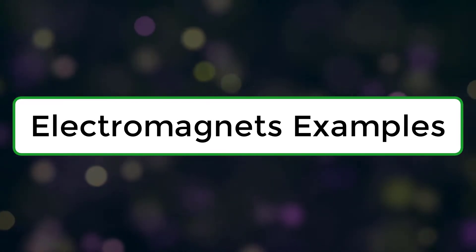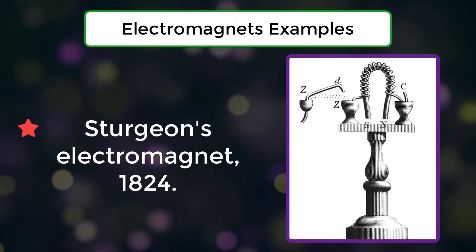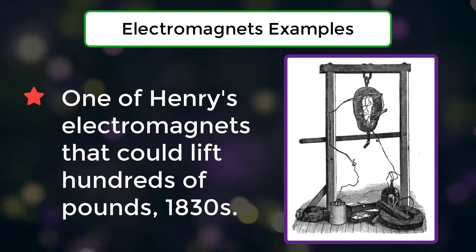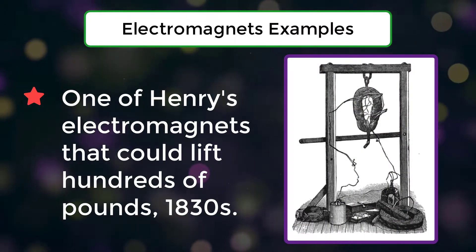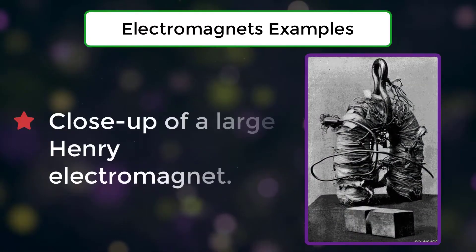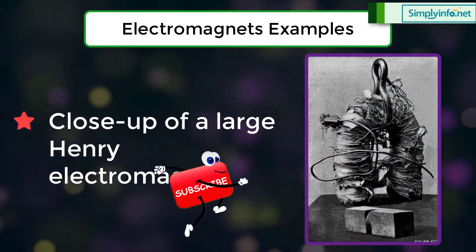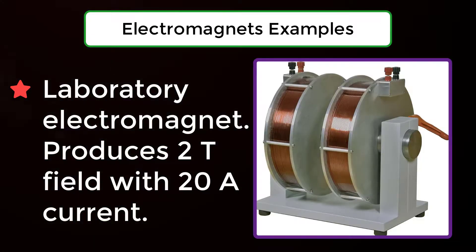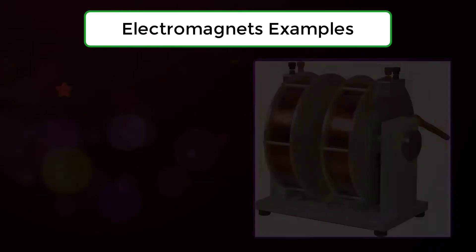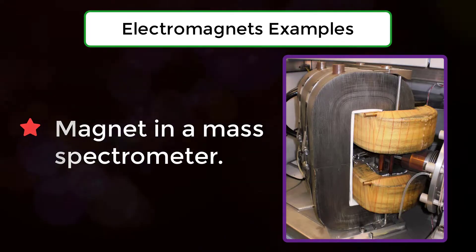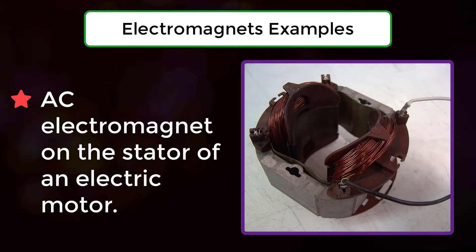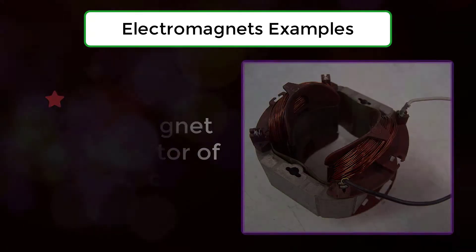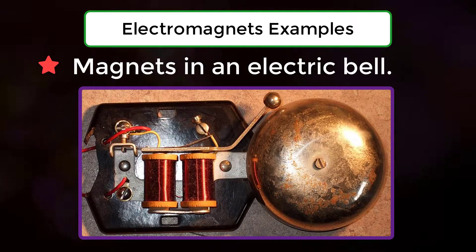Electromagnet Examples: Sturgeon's Electromagnet from 1824; one of Henry's electromagnets that could lift hundreds of pounds in the 1830s; a laboratory electromagnet that produces a 2T field with 20A current; a magnet in a mass spectrometer; an AC electromagnet on the stator of an electric motor; and magnets in an electric bell.